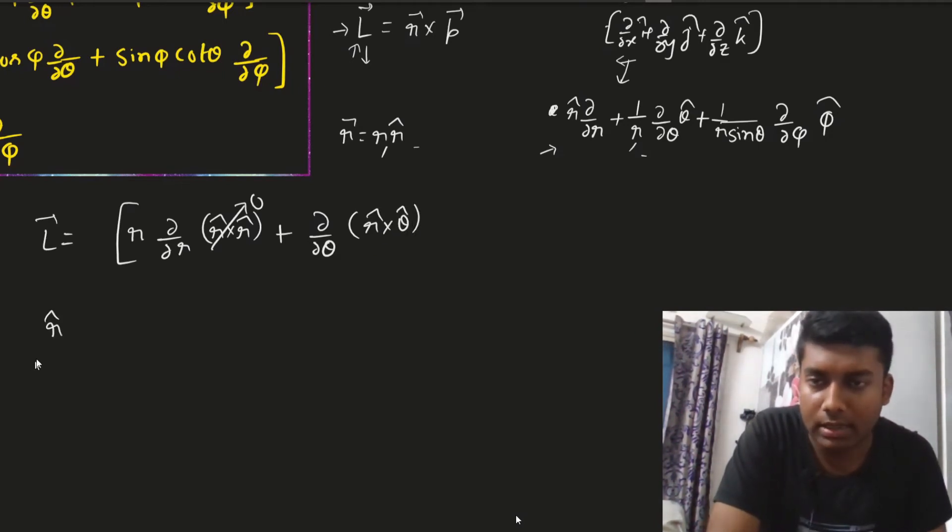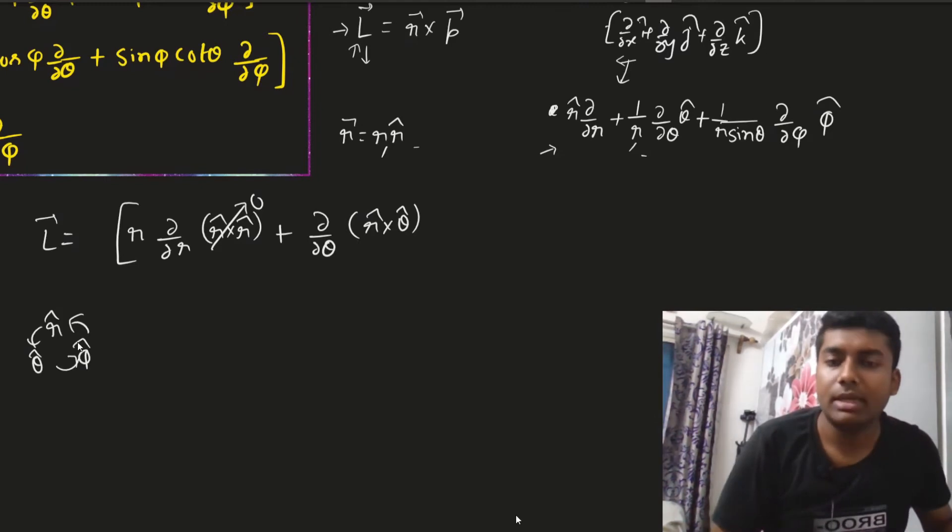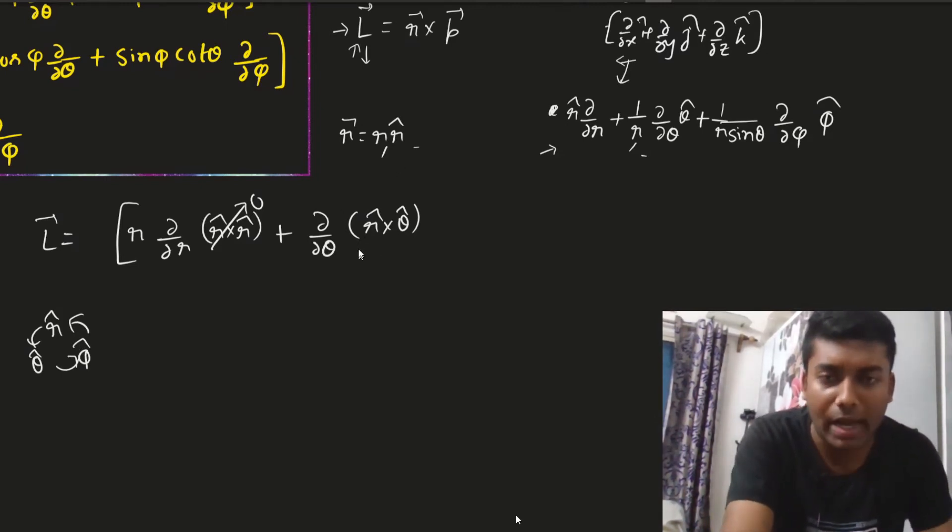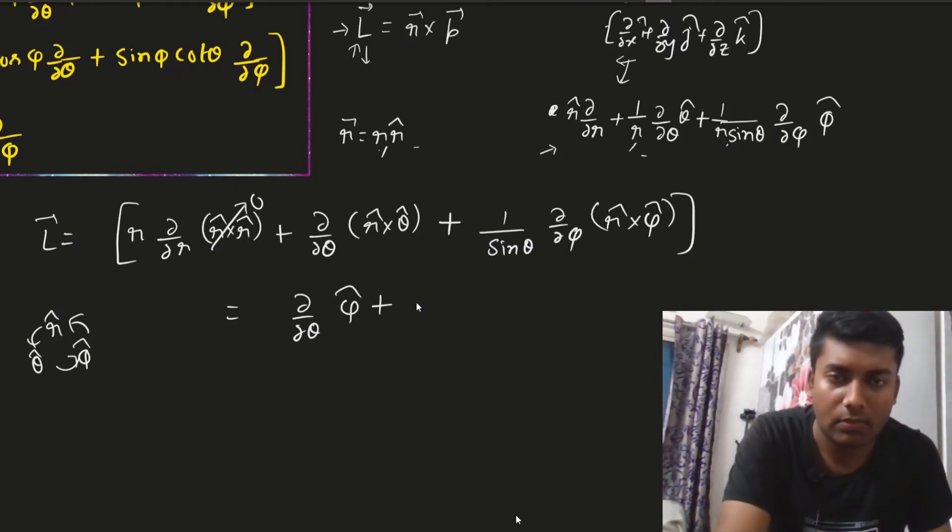Now use this r theta and phi. Now use this cycle. So r cross theta will be phi. So this is nothing but phi plus this and this will be 1 by sin theta and del over del phi r cross phi. Now I can write here, this will be del over del theta r cross theta means phi cap plus 1 by sin theta and this thing r cross phi means minus theta. So this will be minus theta.